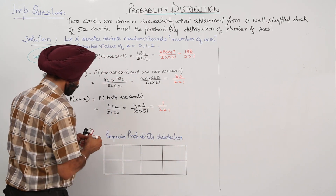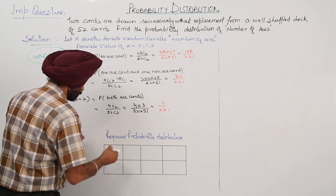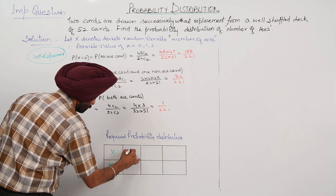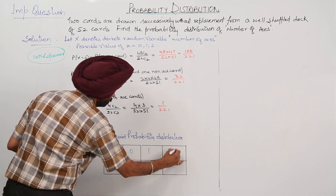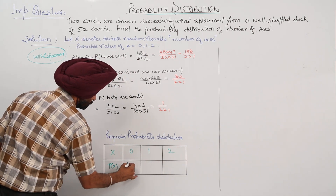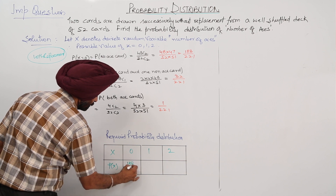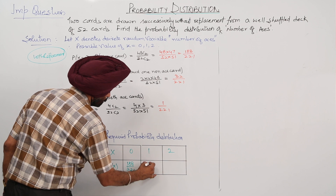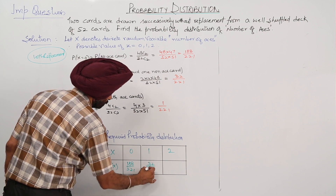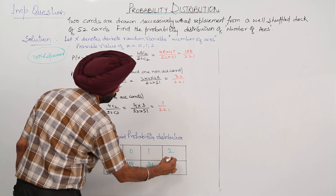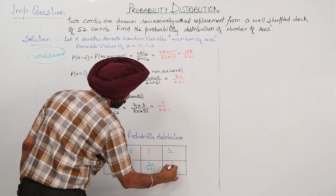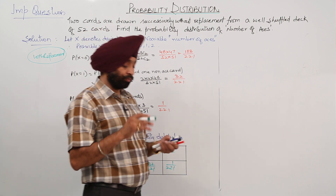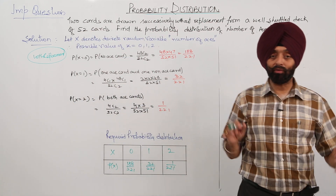The required probability distribution table: X takes values 0, 1, and 2. P(X = 0) = 188/221, P(X = 1) = 32/221, P(X = 2) = 1/221. This completes the probability distribution.